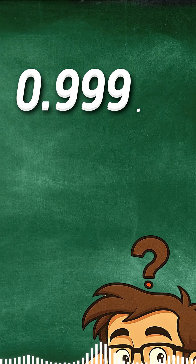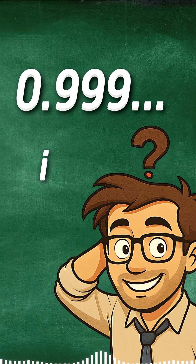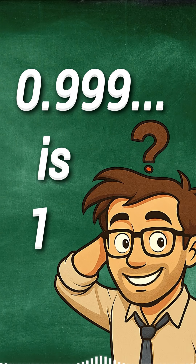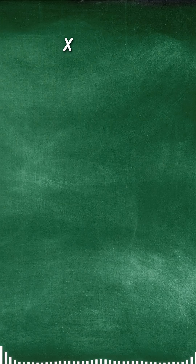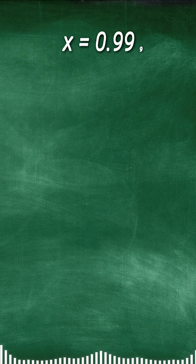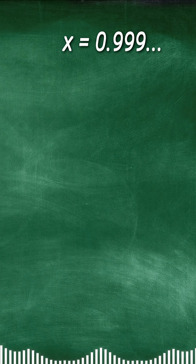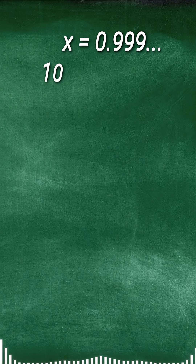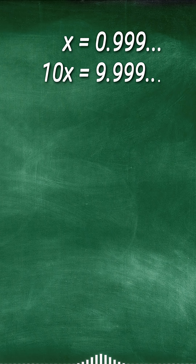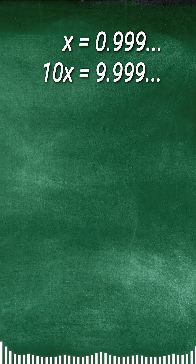0.9 repeating is 1. Let's say that X is 0.9 repeating, then 10X would be 9.9 repeating.